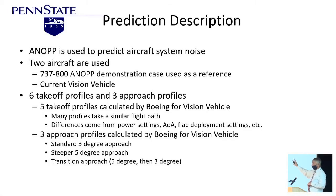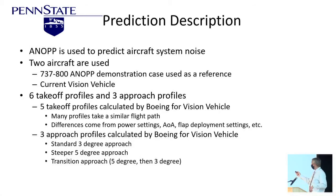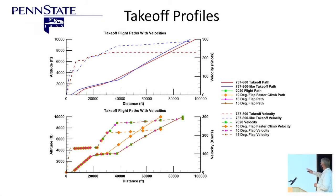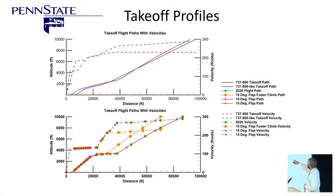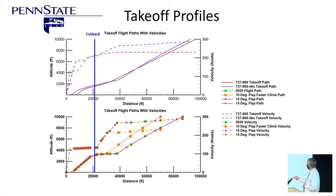Ken Brentner has a routine called ANOP that's been predicting aircraft noise for several years, and I want to give a quick summary of how it's working out for these long slender wings. He did a whole bunch of different flight profiles — here's one showing the altitude profile on top, where aircraft want to get up and out of the way quickly to cut down environmental noise, and also showing how speed increases during takeoff.